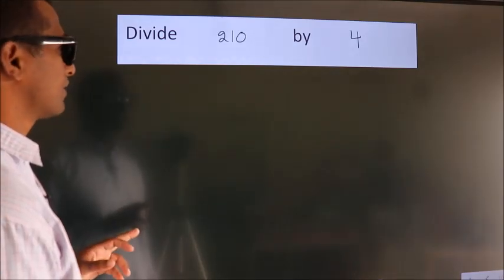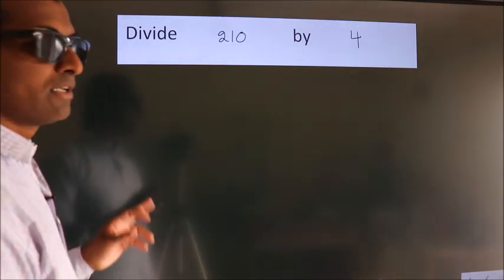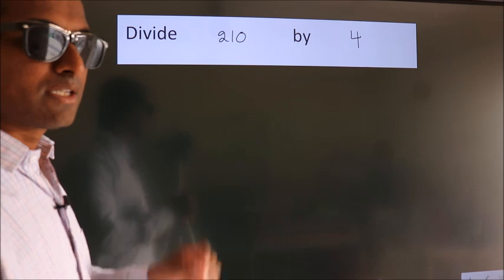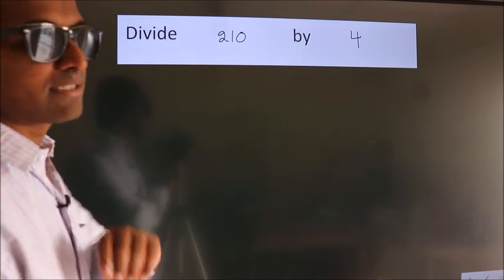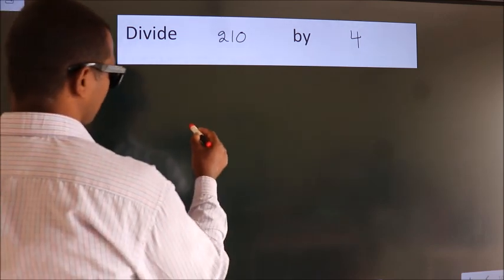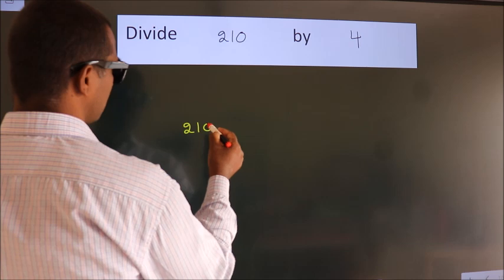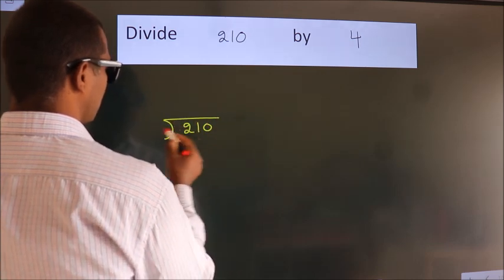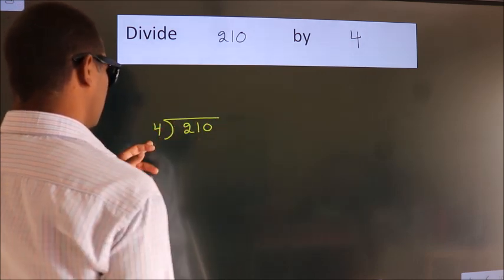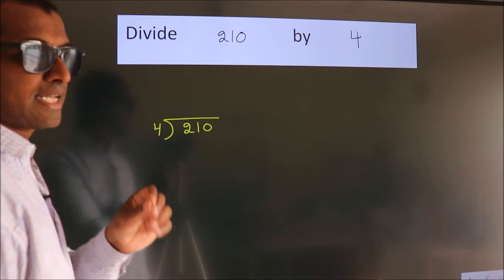Divide 210 by 4. To do this division, we should frame it in this way: 210 here, 4 here. This is your step 1.